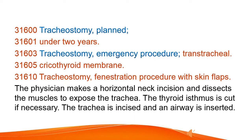Tracheostomy, planned, under 2 years. Tracheostomy emergency procedure, transtracheal, cricothyroid membrane. Tracheostomy fenestration procedure with skin flaps: the physician makes a horizontal neck incision and dissects the muscles to expose the trachea. The thyroid isthmus is cut if necessary. The trachea is incised and an airway is inserted.